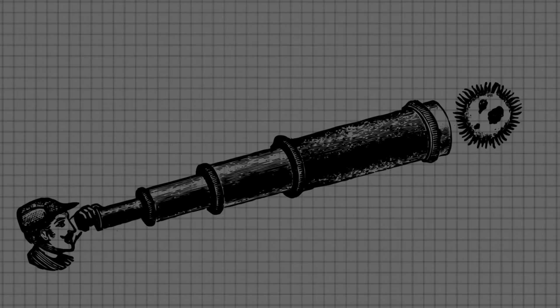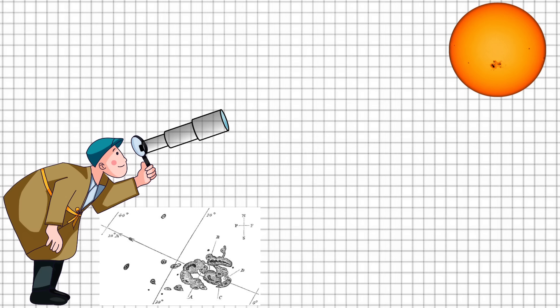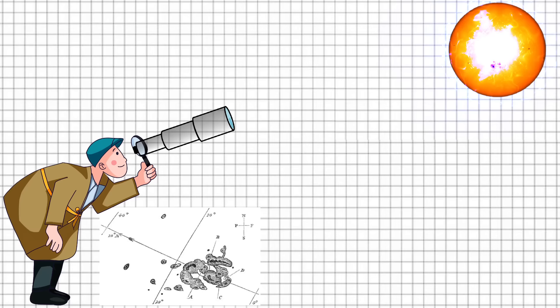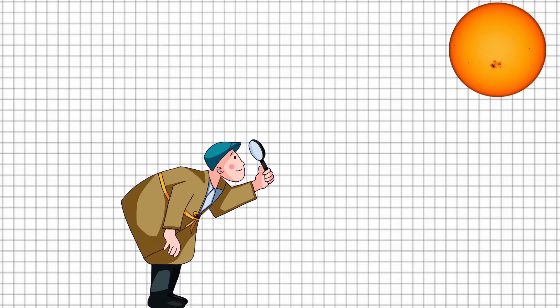Carrington, while sketching sunspots on September 1st, was momentarily blinded by an intense flash. It was so bright that he initially thought something had damaged his observation equipment. Upon rushing outside, Carrington found the bright spots had vanished.